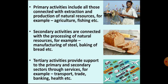Primary activities are those where people are engaged in extracting or harvesting things or raw material from the earth — for example, agriculture, fishing, mining, etcetera. Secondary activities convert raw materials to manufactured goods; manufacturing of steel, baking of bread, and weaving of cloth are examples of secondary activity. Tertiary activities provide services to people, such as health care, transport, trade, banking, communication, insurance and entertainment.